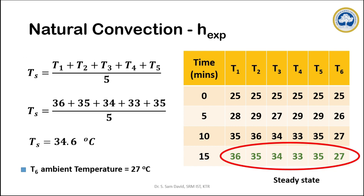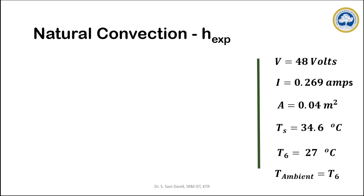Since thermocouples T1 to T5 are fitted on the metal rod, the average of these 5 thermocouple readings is taken as the surface temperature of the rod, denoted as T_S — which is 34.6°C in this case. T6, the ambient temperature, is 27°C. We now have all the experimental data collected and can proceed with further calculations.